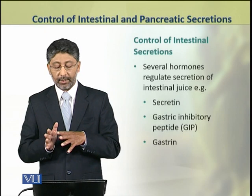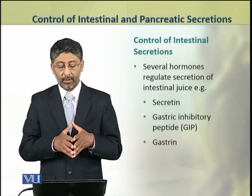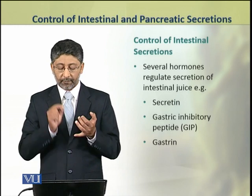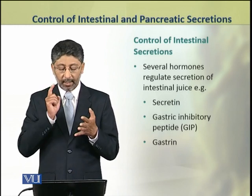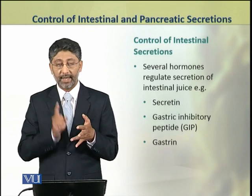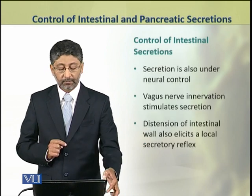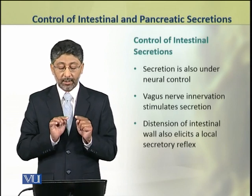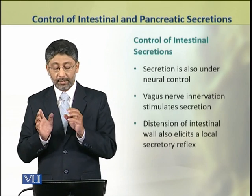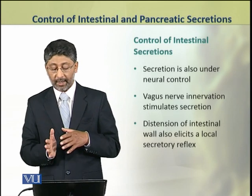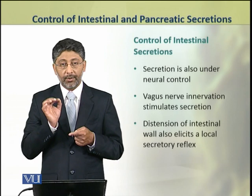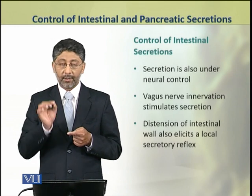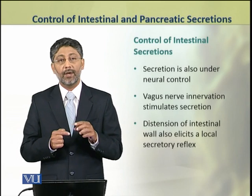Now we shall discuss the control of these intestinal secretions. Several hormones regulate the secretion of intestinal juices, for example secretin, gastric inhibitory peptide, and gastrin. The secretion of intestinal juices is also under neural control. The vagus nerve innervates the small intestine and stimulates the secretion of intestinal juices.